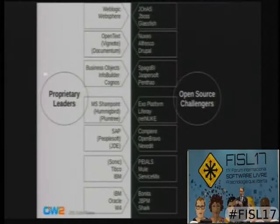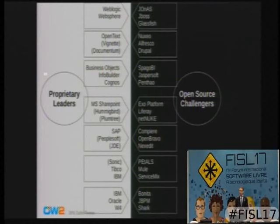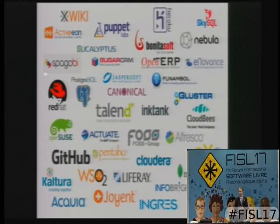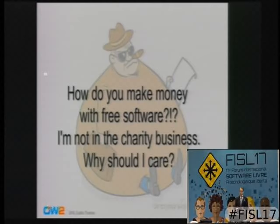Looking at enterprise software, which was really three-quarters of the software industry in terms of revenue, each product category defined by proprietary vendors was challenged by open source vendors — to the extent that some proprietary vendors literally disappeared. Think of Vignette in document management, think of vendors in business intelligence, etc. That gave us a bonanza of startups and small pure-play open source companies.